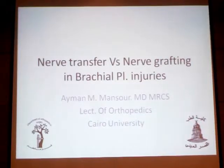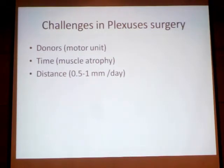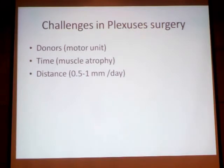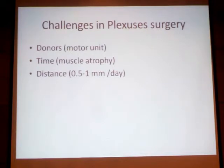Nerve Transfer vs Nerve Grafting in brachial plexus surgery. It's always a challenge — the key point is that we need motor units. We need functional units. Not just nerve continuity — we need motor units to function. Every time, we need the muscle to have functional units. How much regeneration is going to occur?